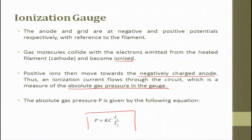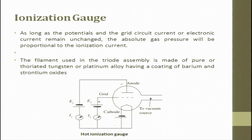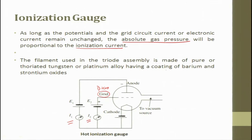The ionization current flows through the circuit, which is measured as absolute gas pressure in the gauge. The absolute gas pressure can be defined as P = K · I1 / I2, where I1 and I2 are currents and K is a factor. You have an anode, a cathode, and a grid also called a bias, and here is a vacuum. As long as the potential and the grid circuit current remain unchanged, the absolute gas pressure will be proportional to the ionization current. The filament used in the triode assembly is made of pure or thoriated tungsten or platinum alloy coating of barium and strontium oxide.